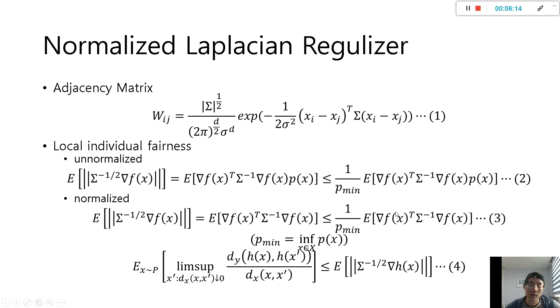Also, we can use Laplacian regulizer as unnormalized, but we can also use normalized Laplacian regulizer by changing adjacency matrix as equation 1. Laplacian matrix can be normalized, and by assuming p_min exists and x is bounded, equation 2 and 3 show that equation 4 is not infinity, either Laplacian regulizer is normalized or unnormalized.